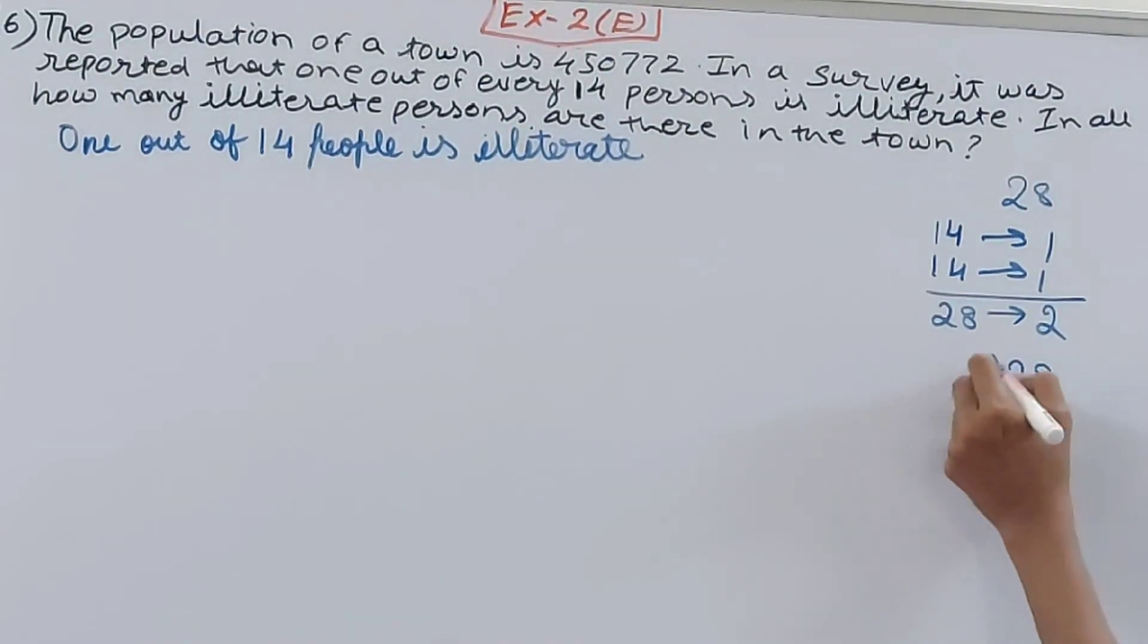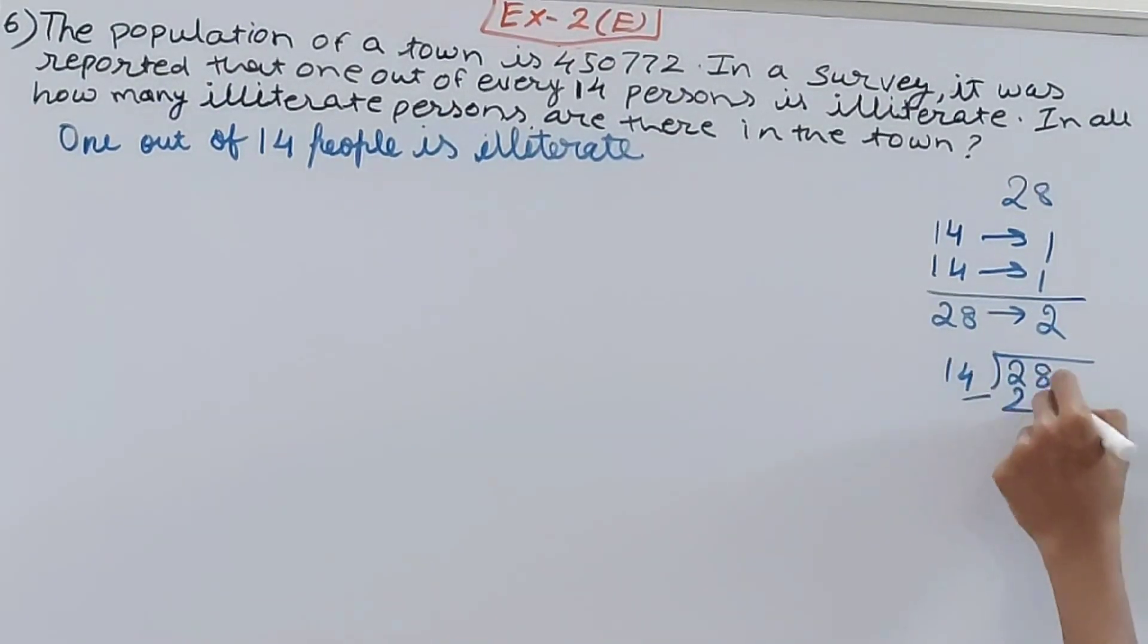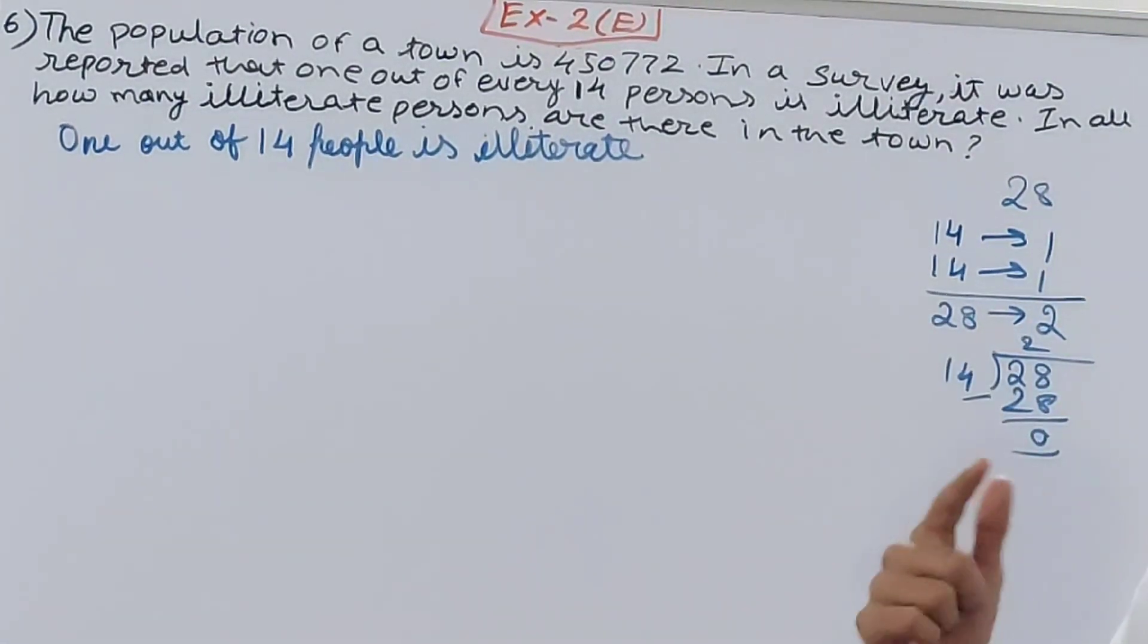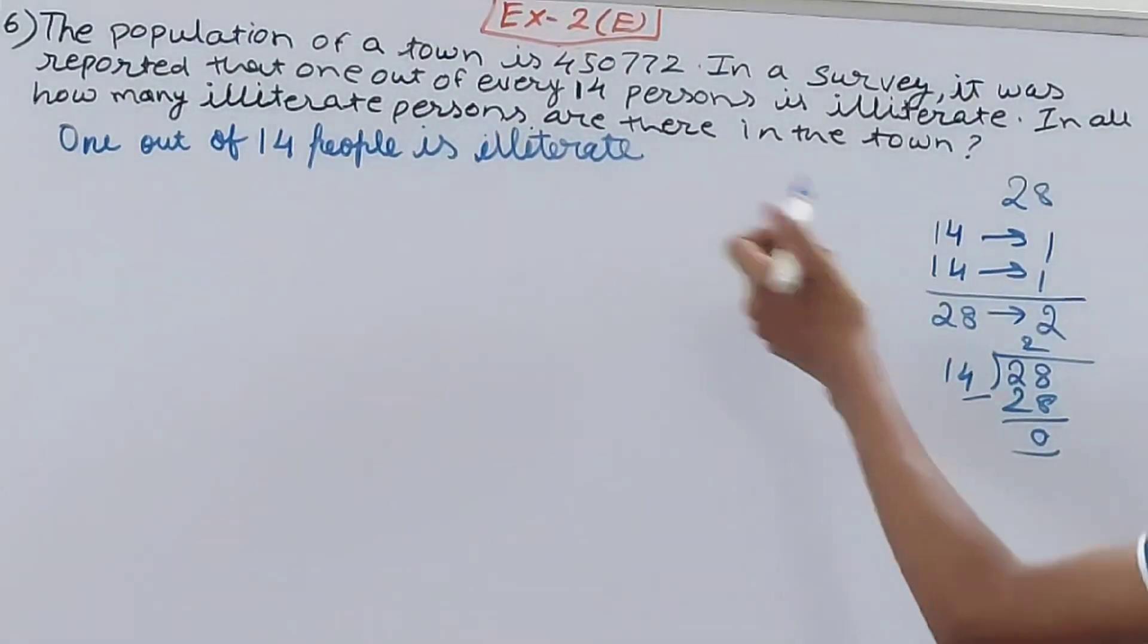Right, so you can see in 28 people, two people are illiterate. So what we can simply do is use this formula: just divide 28 by 14. Minus 28 and you get zero. This will go two times. So in 28 people, if one out of 14 is illiterate, then in 28 there are two illiterate. How we got that? Dividing 28 by 14. The only thing that changes in this question is this 28 becomes 450,772. So what will happen? We will divide 450,772 by 14.